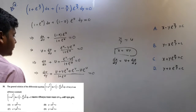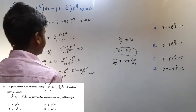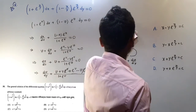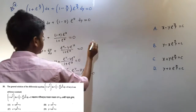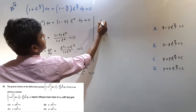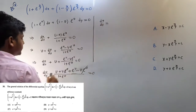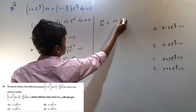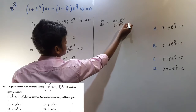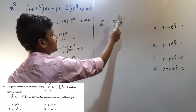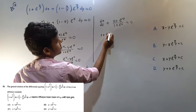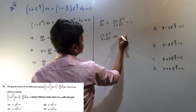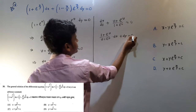The third part is b into e to the power v. So let me take a look next: dv/dy plus e to the power v, divided by 1 plus e to the power v. So 1 is 0. So: dv/dy plus e to the power v, dv. I will tell you: e to the power v dy equals 0.